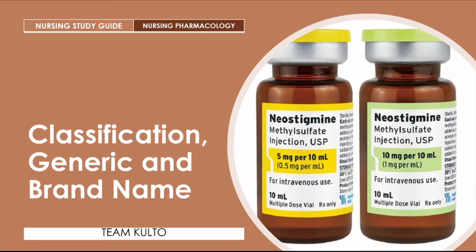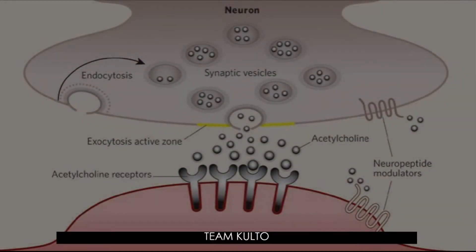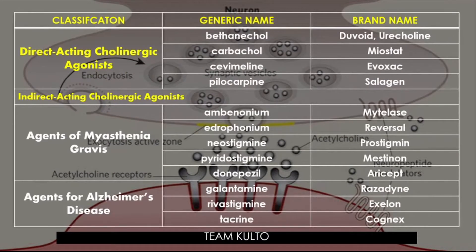Cholinergic agonists can either be direct or indirect acting. Under direct acting cholinergic agonists, the generic names are bethanechol, carbachol, cevimeline, and pilocarpine. Their respective brand names are Duvoid, Urecholine, Myostat, Evoxac, and Salagen.